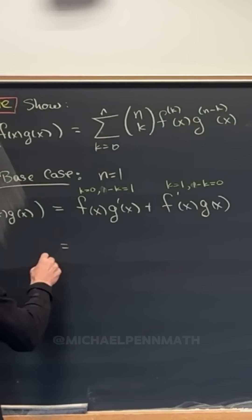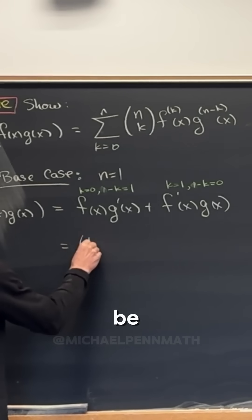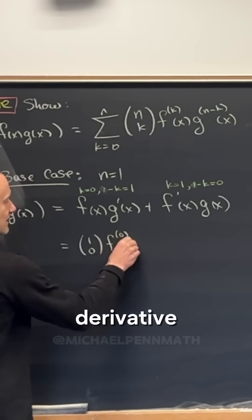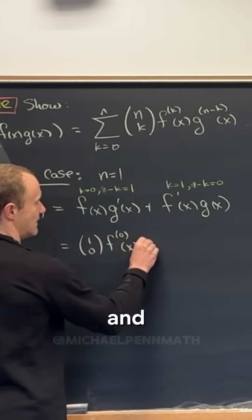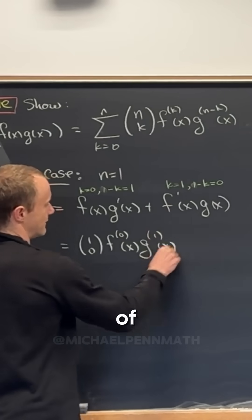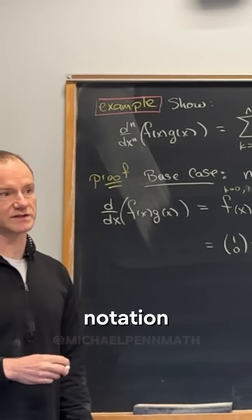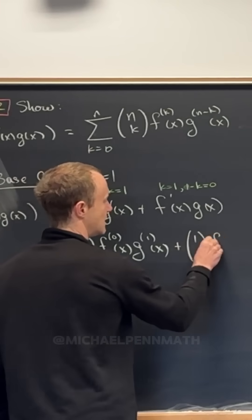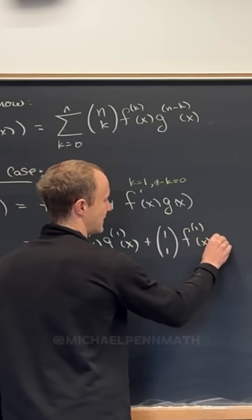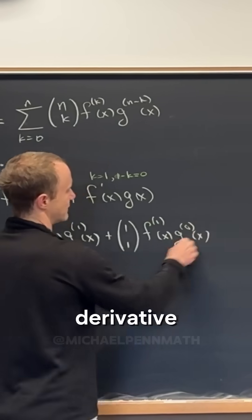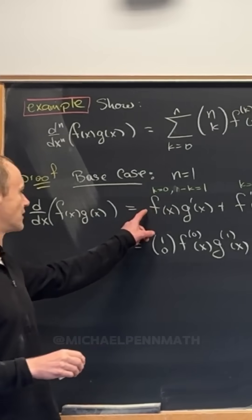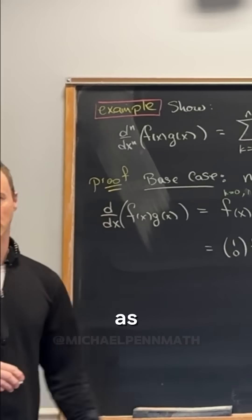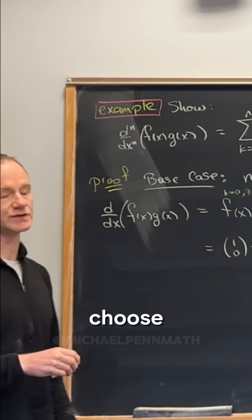But now we can rewrite this. Let's see, this is going to be 1 choose 0, the zeroth derivative of f, and then the first derivative of g. Just writing it in a weird notation. And then this is 1 choose 1, the first derivative of f, and then the zeroth derivative of g. Notice that there's a 1 right here. Well, 1 choose 0 is 1, so we might as well take that 1 and write it as 1 choose 0.